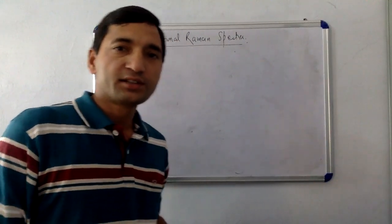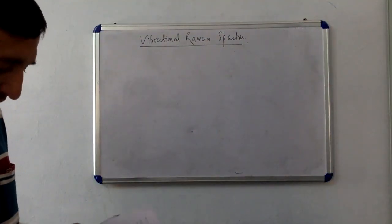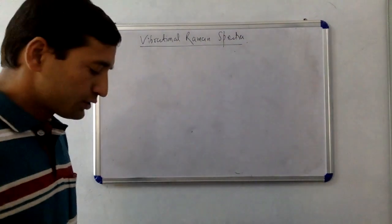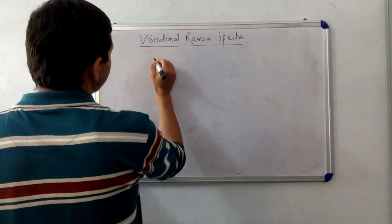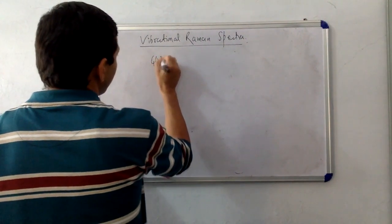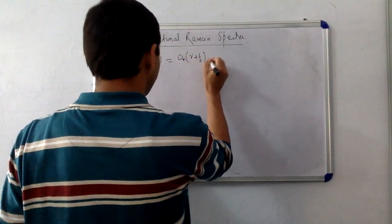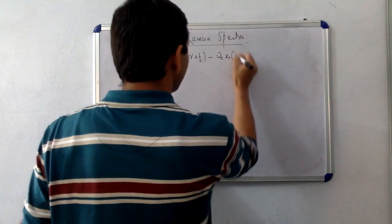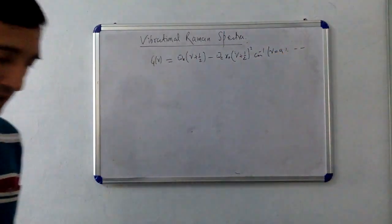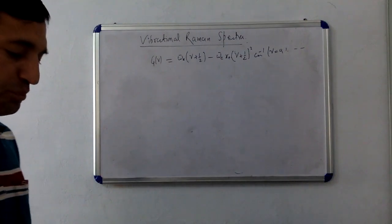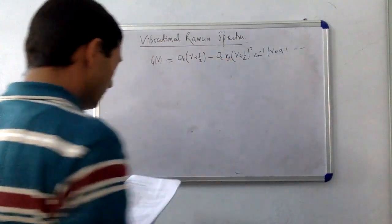Welcome everyone. Today we will be discussing the vibrational Raman spectra. As we have already discussed, for every vibrational mode we can write the energy expression: G(ν) = ω_e(ν + 1/2) − ω_e x_e(ν + 1/2)² cm⁻¹, where ν = 0, 1, 2, 3, and so on. Here ω_e is the equilibrium vibrational frequency in wave numbers and x_e is the anharmonicity of the molecule.